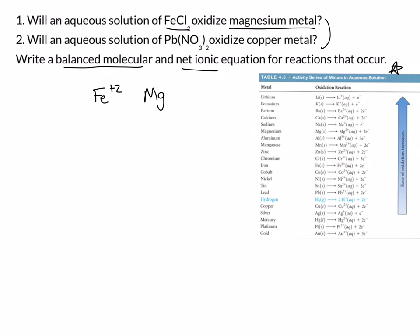So now what we're going to do is we're going to take these two species, and we're going to compare their relative position on the chart. Now remember, a metal that is higher on the chart is going to be oxidized by any ions that are below it on the chart.